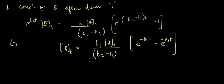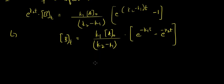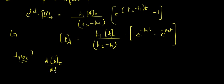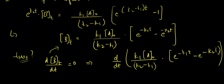Now we find t_max — the time at which the concentration of B is not changing with time. For finding it, we equate dB(t)/dt equals zero, since this is the time when concentration of B would not be changing. So we take d/dt of k1·A0 over (k2 minus k1) times (e to the power minus k1·t minus e to the power minus k2·t), set equal to zero.